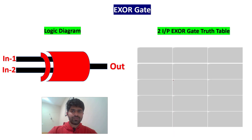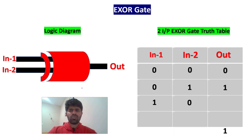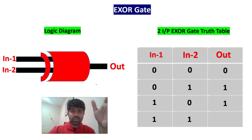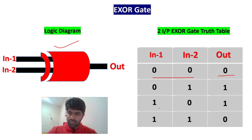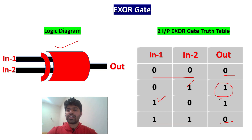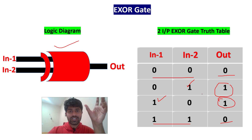XOR gate is very important because in most interviews they will ask this one — its application is great and it is a little tricky. Here is what is special: if both inputs are zero, output will be zero. If both inputs are one, output will also be zero. If and only if any one input is high, then only output is high. This is why it is tricky — please be careful.